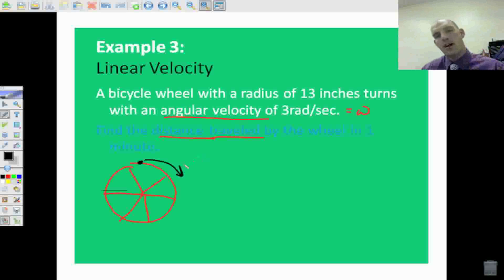Well, what we need to figure out is, how much angle does it cover? Well, if it's 3 radians in 1 second, then that means 1 minute equals 60 times 3. Because 60 seconds is 1 minute. So our angle, theta,